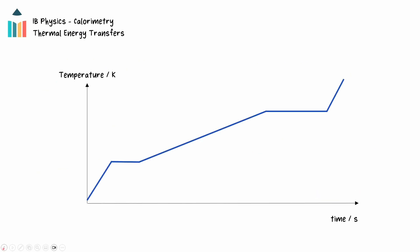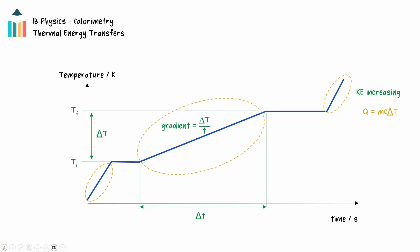If we explore the heating curve in closer detail, we can relate some of the aspects of the graph to these concepts. In the sloping regions of the graph, the kinetic energy of the particles is increasing. These regions are described by the formula q equals mc delta T. Notice that the gradient of the line is the rate of change of temperature. Materials with high specific heat capacities will require more energy to change temperature, and this will result in smaller gradients on the temperature-time graph.